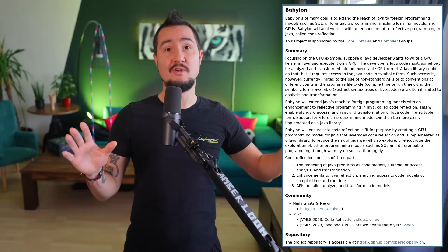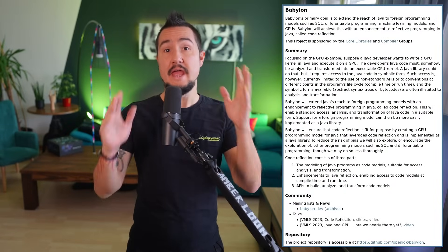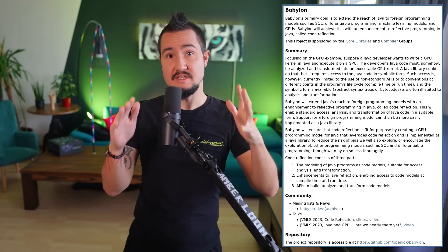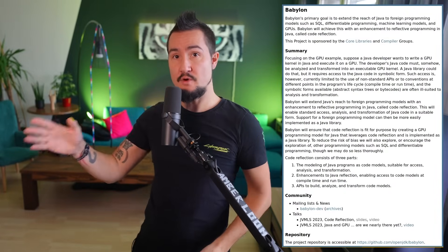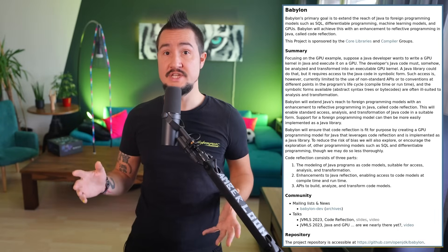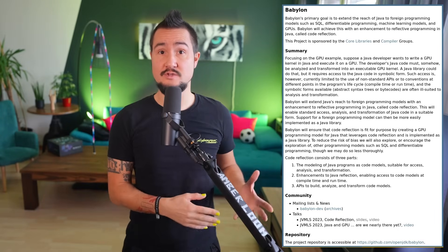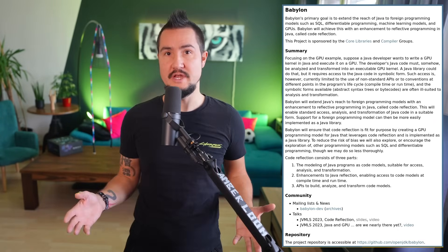And this is exactly what the brand-new Project Babylon sets out to accomplish. Its main thrust is code reflection. Another important exploration is the so-called Heterogeneous Accelerator Toolkit, HAT, for GPU computation. Let's have a look at both.